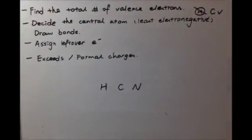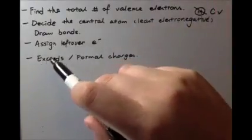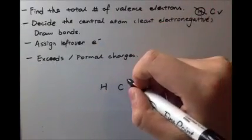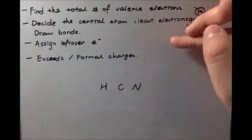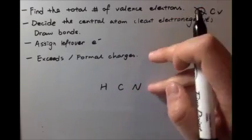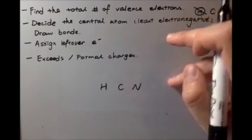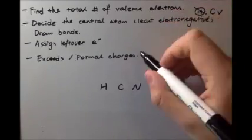Remember, drawing Lewis structures involves trial and error, and we correct as we go. Finally, if necessary, we put extra electrons on the central element. Remember that elements after row three will often end up having more than eight electrons. Then finally, we check the formal charges.